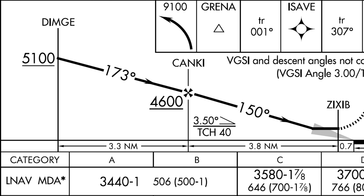There's no vertical guidance on this approach from the GPS, even for WAAS-enabled units. The minimums section only lists LNAV — lateral navigation. But if we know our ground speed, we can figure out a descent rate that will keep us on this constant angle.